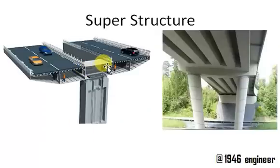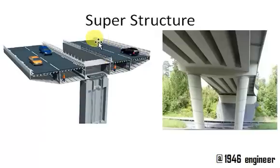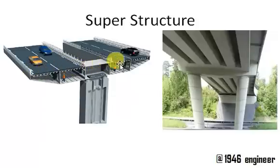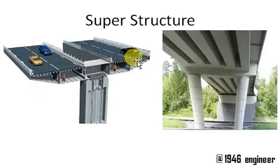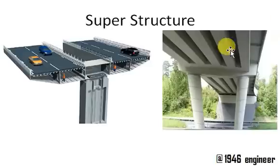In the superstructure, we have the deck. All the traffic-bearing portion is called the deck — this black bitumen portion. It will have a horizontal slab spanning the entire area. The slab rests on girders or beams. The above portion is called the deck, and these hollow portions beneath are called soffits. These are the sub-parts of the superstructure.